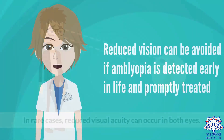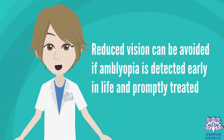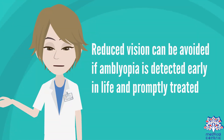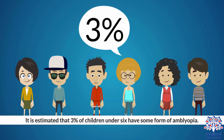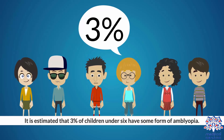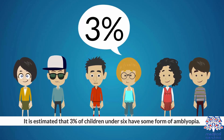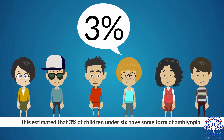Reduced vision can be avoided if amblyopia is detected early in life and promptly treated. If left untreated, the condition can cause severe visual disability in the affected eye, including legal blindness. It is estimated that 3% of children under 6 have some form of amblyopia.